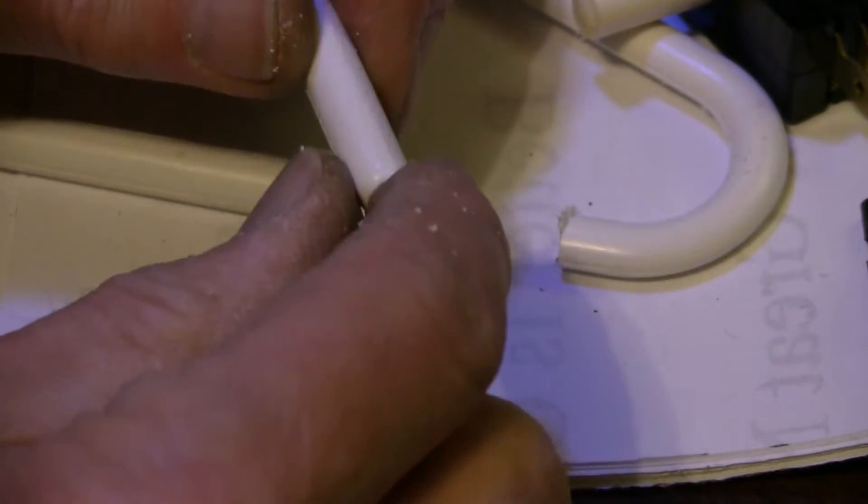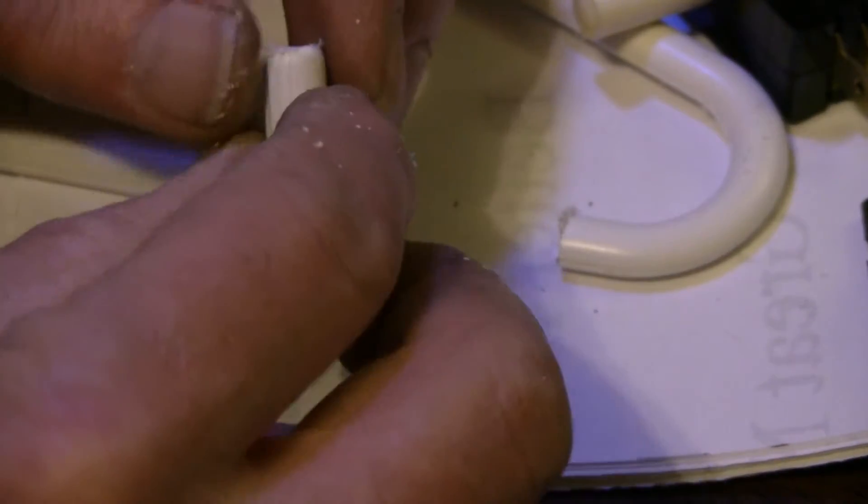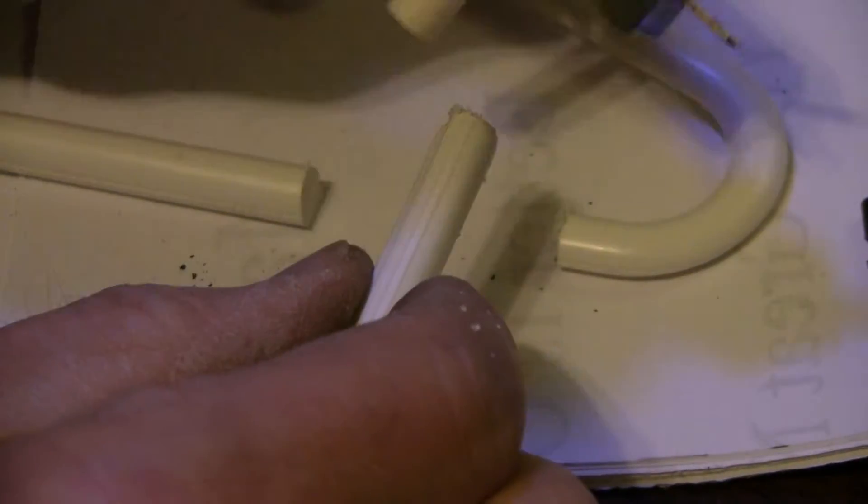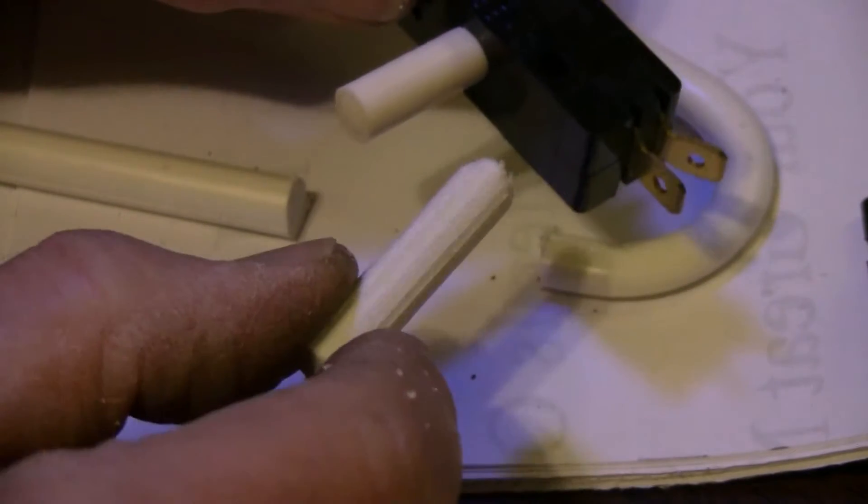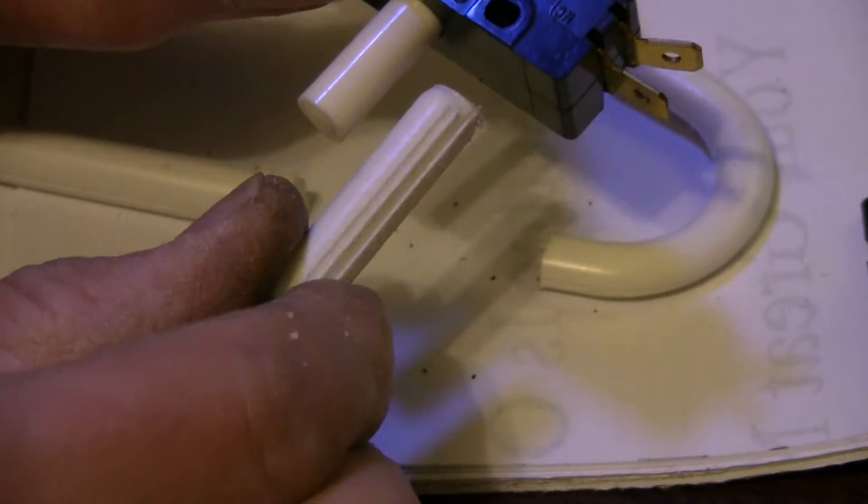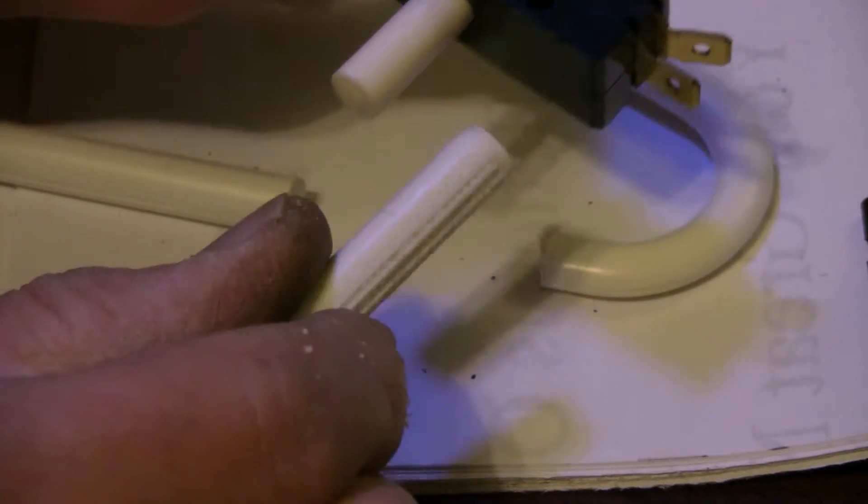It's going to have to be shaped down. I'll shape it down on a belt sander so that it's the same diameter as the original. But it's not that far off, so it should be fairly easy.